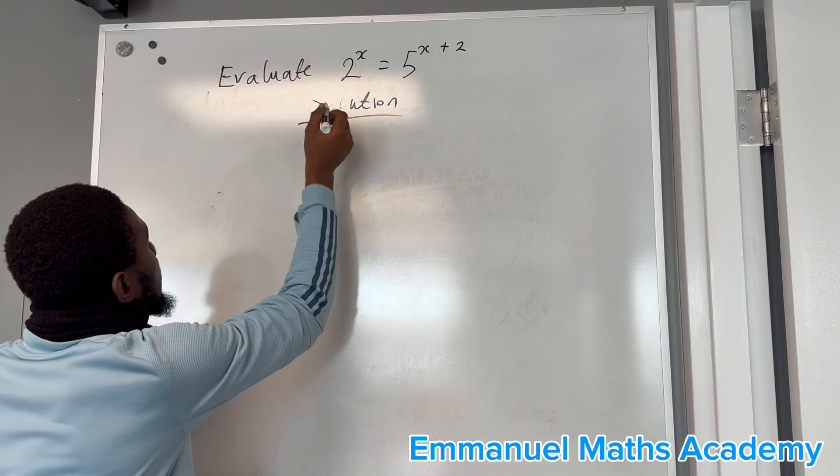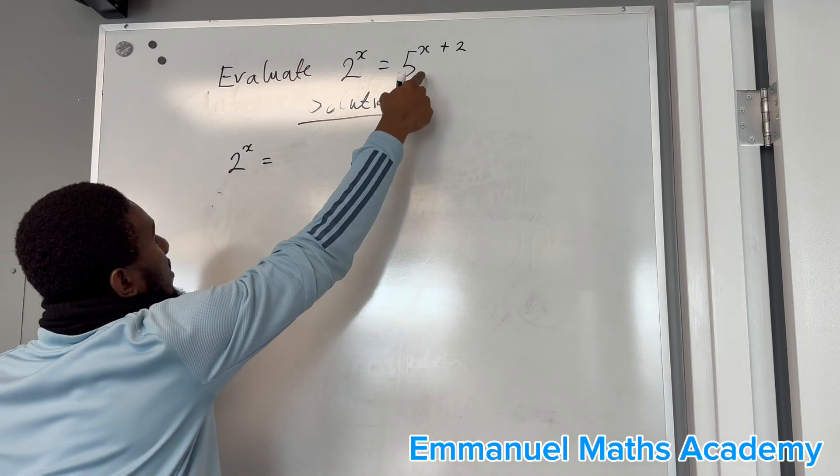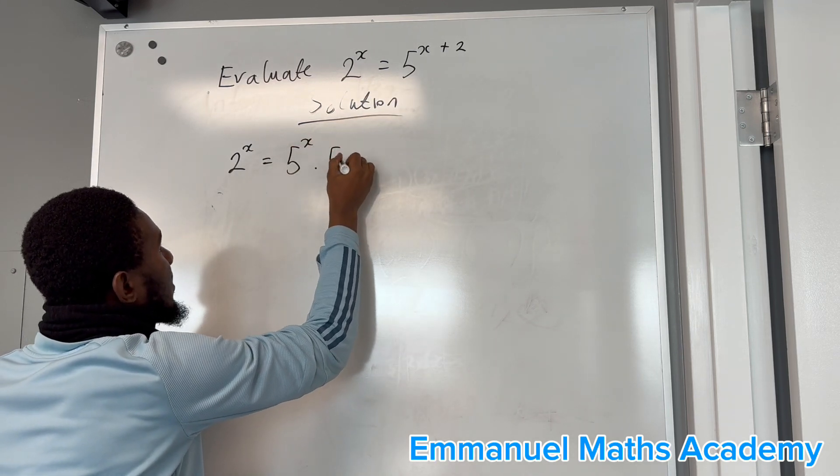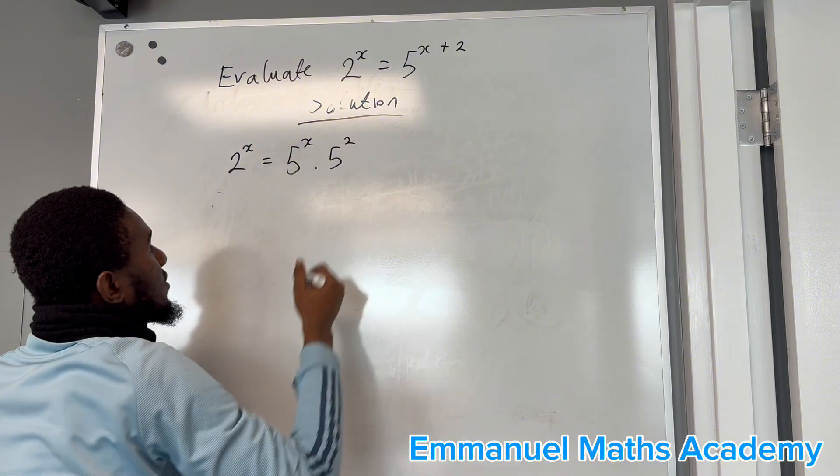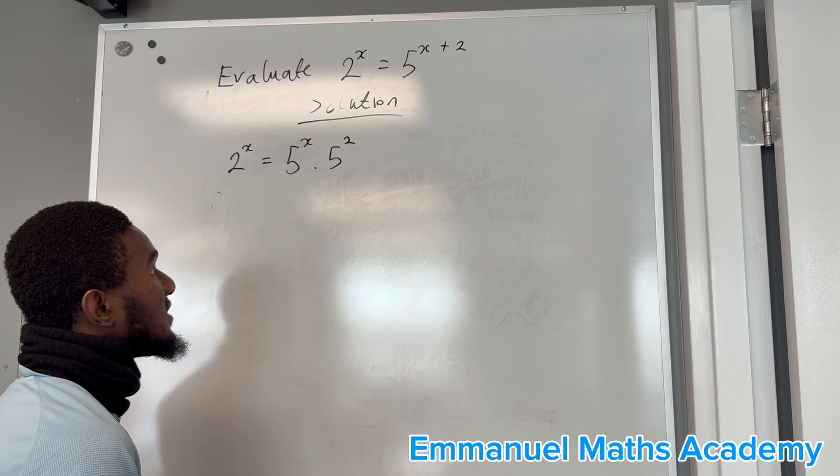So 2 power x equals 5 power x times 5 power 2, from the basic law of indices.